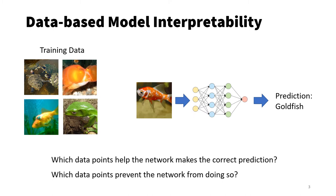In this paper, we are interested in a particular type of interpretation, one that attributes network predictions to the data that the network was trained on. After the network has been trained, we give it a test data point. As an example, here we have a picture of a goat fish with a ground truth label. We want to answer the following questions: Which data points help the network make the correct prediction? And which data points prevent the network from making the correct prediction?